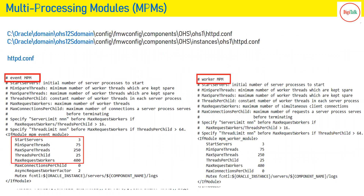All the tuning parameters for the web server are defined inside each MPM section, and the entry for each MPM can be found in the httpd.conf file. You are seeing two directories for httpd.conf — the first is the staging directory for OHS and the second is the instance directory. In the screen you can see a section for the Event MPM and on the right side a section for the Worker MPM.